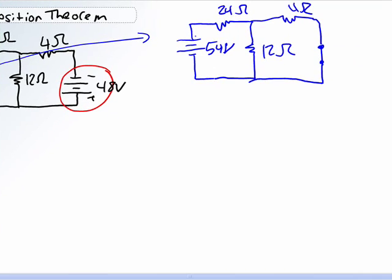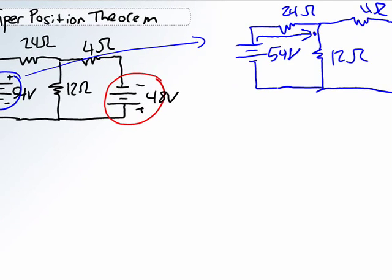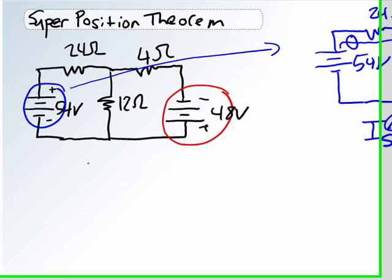So how does the 54-volt source react? Well, it's going to start producing a current that's going to travel in this direction. And at this point right here, it's going to split up between the 12-ohm resistor and the 4-ohm resistor. So we need to first find out what our source current is.